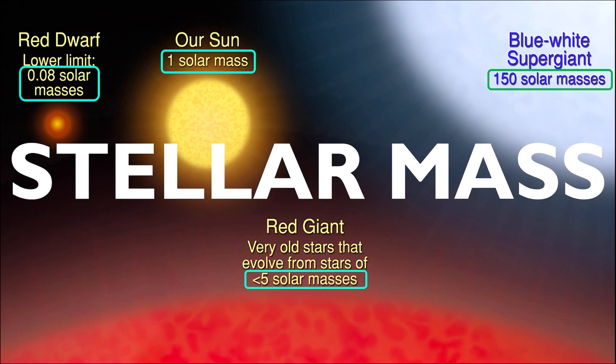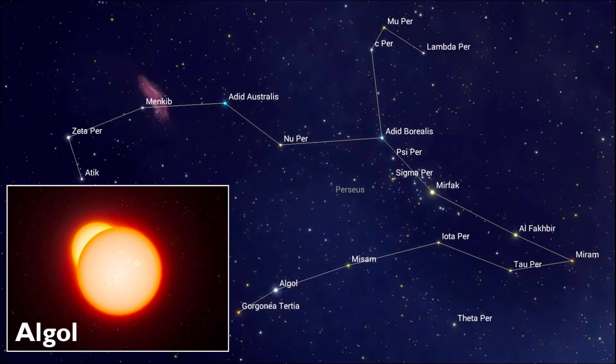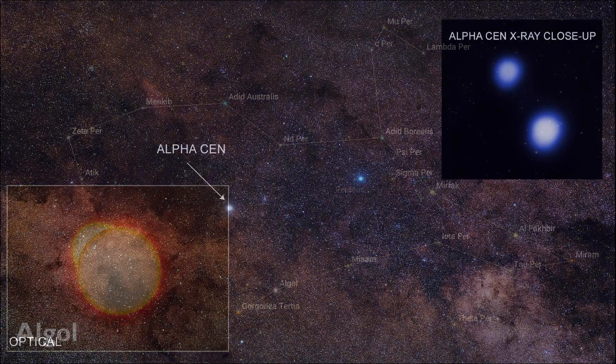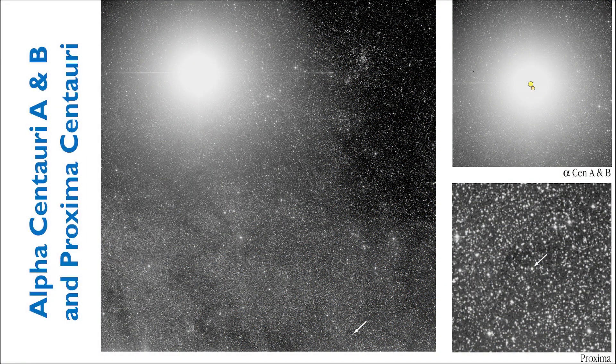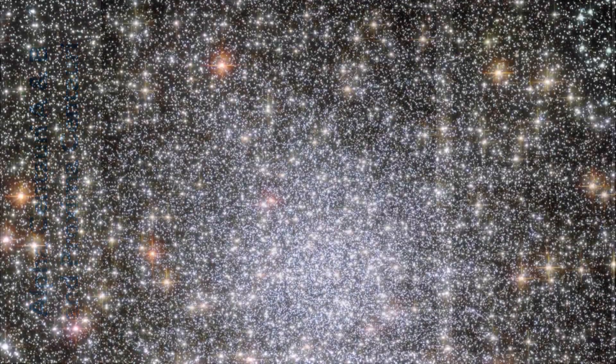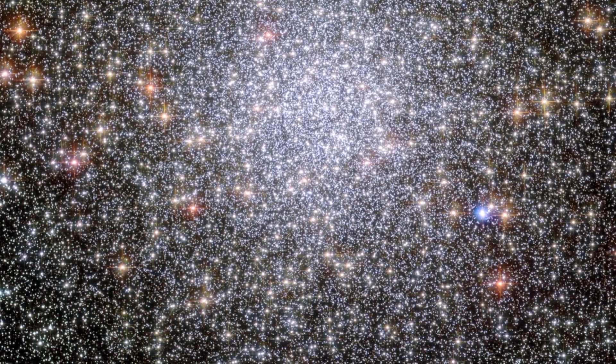Luckily, most stars don't come individually. Well, the Sun does, but other stars? They can come in pairs, in triple systems like Alpha Centauri A, Alpha Centauri B, and Proxima Centauri, or systems containing more than three stars. Way more than three stars.